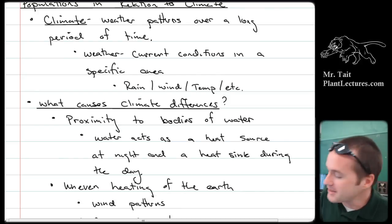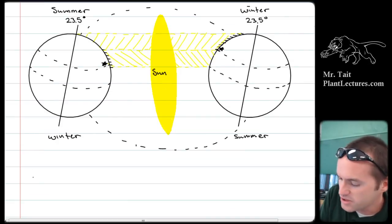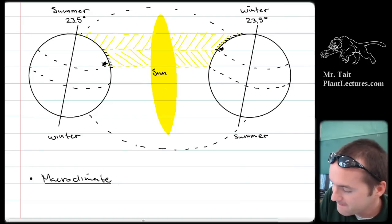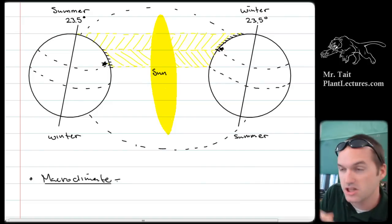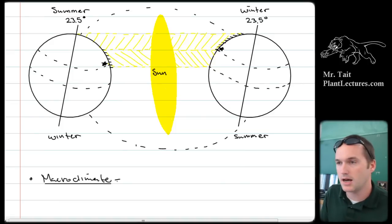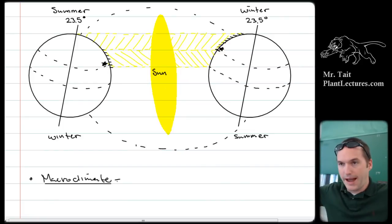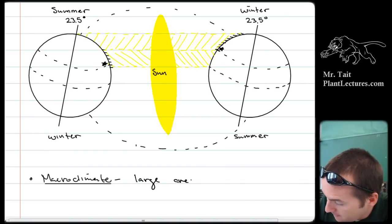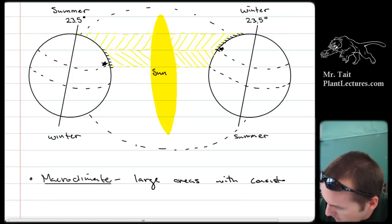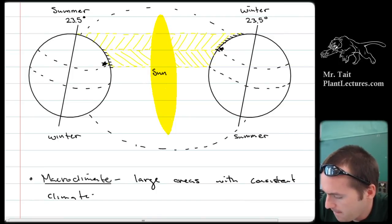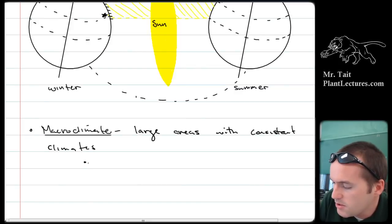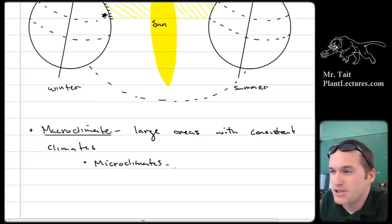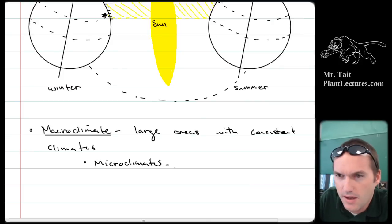Two more climate distinctions: macro climates are large areas with a very consistent climate — you average out a large space and conditions seem consistent. Within a macro climate, you get micro climates — small areas with a significantly different set of weather conditions or patterns.